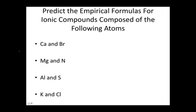Let's try predicting the empirical formulas for the ionic compounds composed of the following atoms below. If we're forming an ionic compound from calcium and bromine, we know that calcium forms ions with a positive two charge. And we can predict this because calcium is in the second column on our periodic table. Bromine forms ions with a negative one charge. And we can predict that because we know bromine is in the seventh column on our periodic table. So if calcium and bromine combine to form an ionic compound, the empirical formula of that compound will be CaBr2.